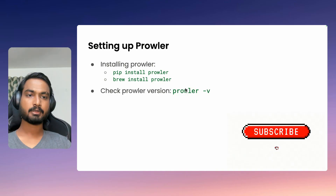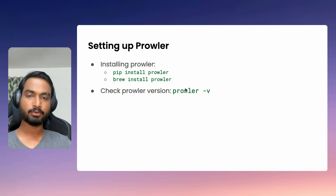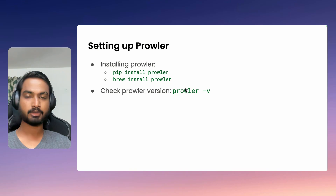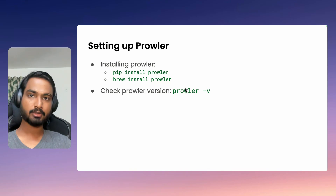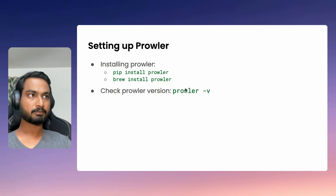When it comes to installation of Prowler, it is pretty straightforward. If you are on Linux or Windows, you can just use the pip utility — the Python installer utility — to go ahead and do pip install Prowler. It goes ahead and installs the binary for you. But if you are on Mac, you can use brew: brew install Prowler. And that's it. Prowler would be installed on your system and you could start using it.